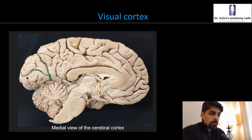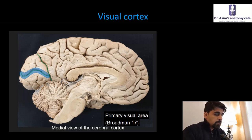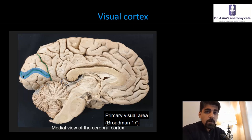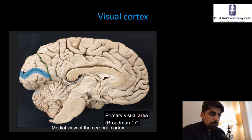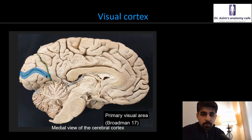Now we know a little about the occipital lobe. The next question is: where is the primary visual area? The primary visual area is basically a narrow strip of cortex situated all along the length of the calcarine sulcus. It's a striate cortex situated within the walls of the calcarine sulcus — specifically within the superior wall and the inferior wall. The superior wall is formed by the cuneus gyrus and the inferior wall by the lingual gyrus or lingula. This narrow strip of cortex along the calcarine sulcus is known as the primary visual area, also known as Brodmann's area 17.